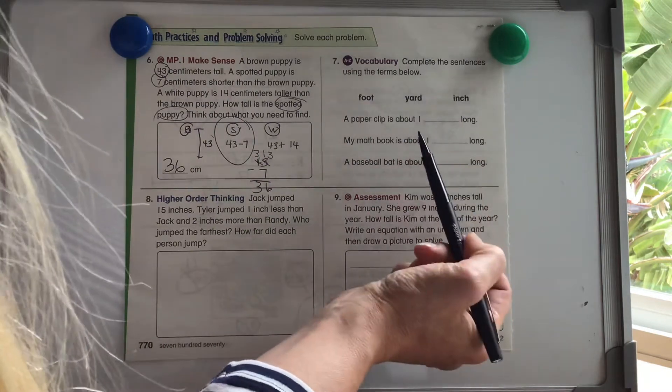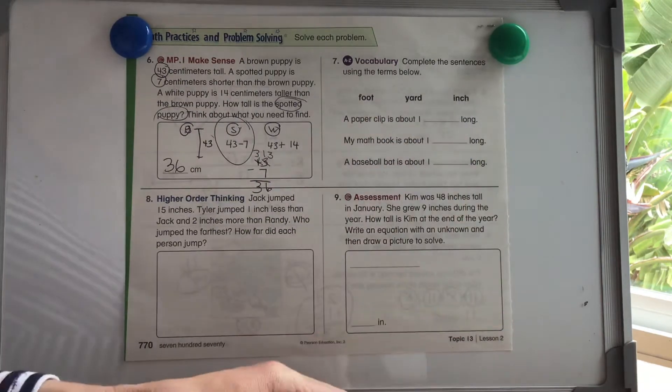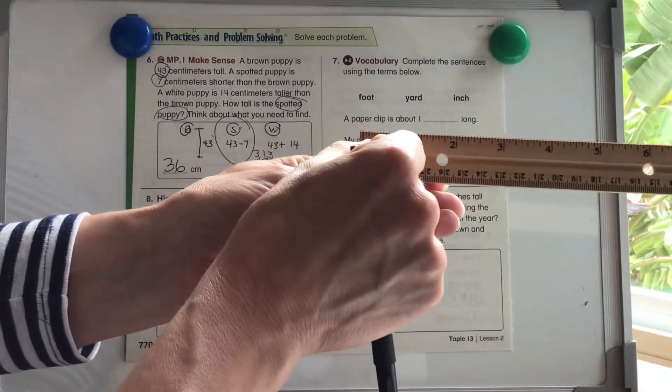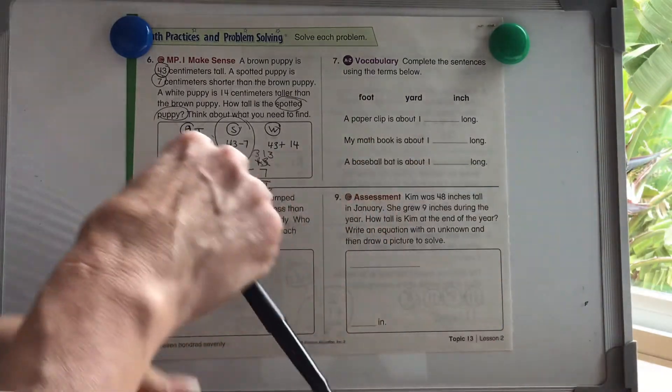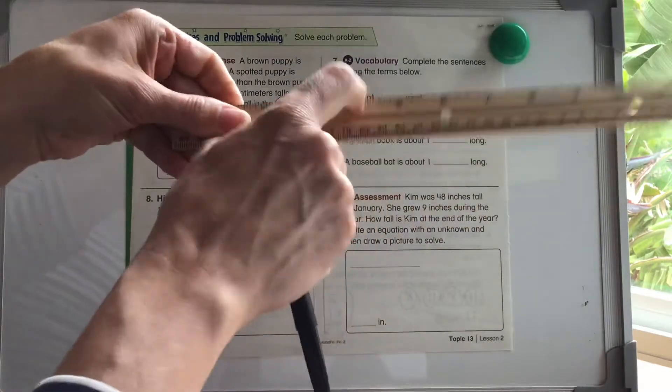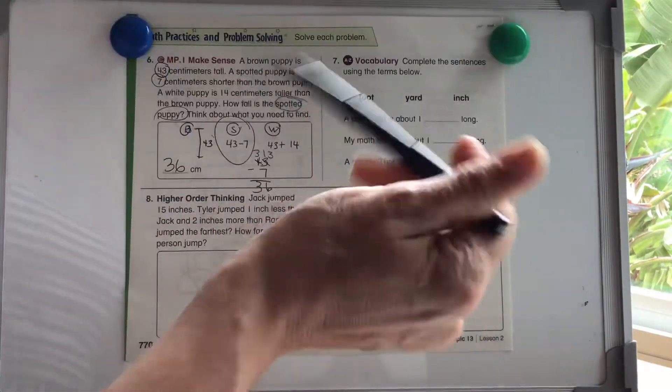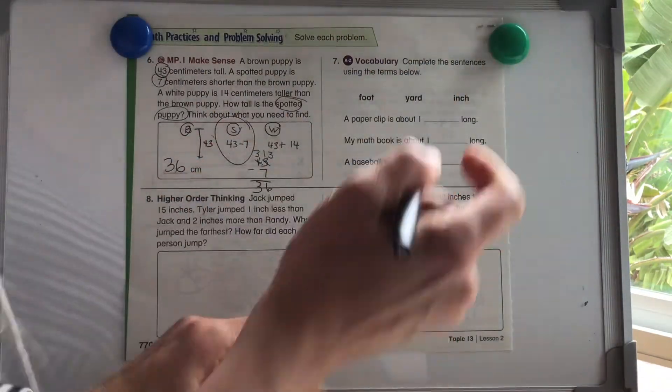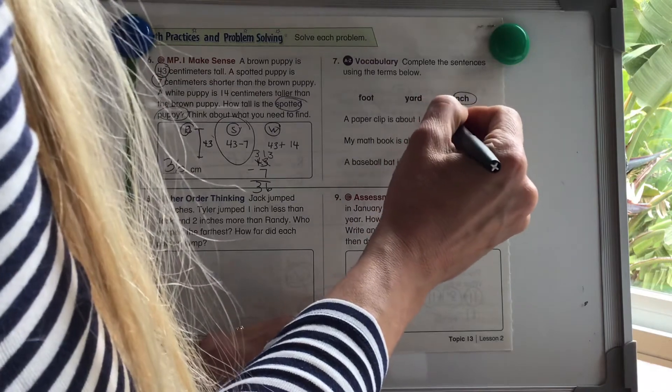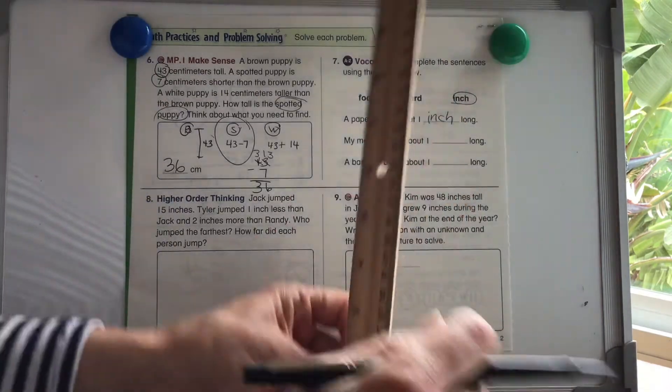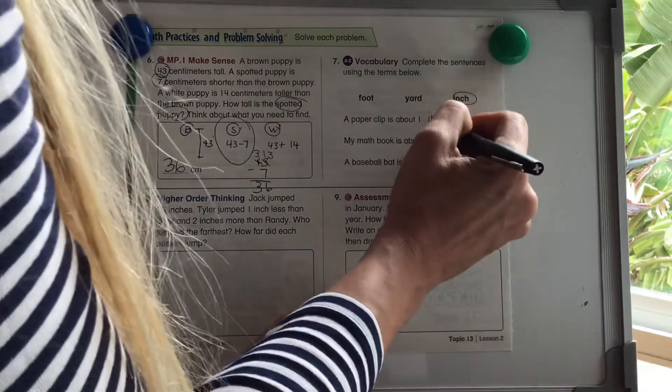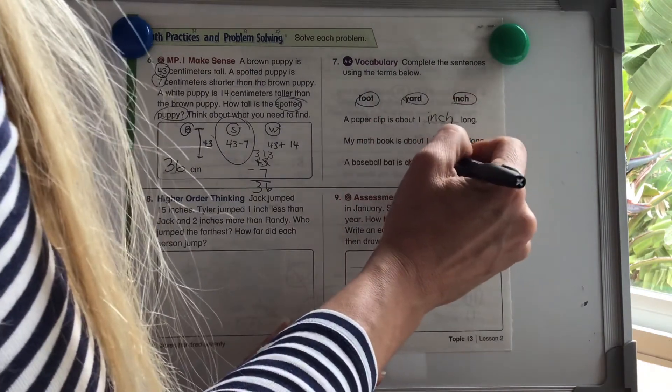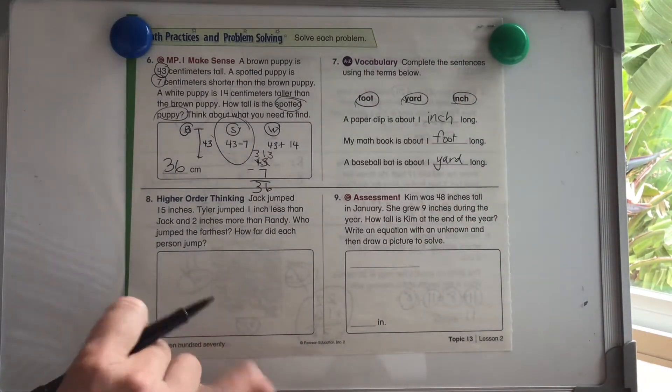Let's take a look at our vocabulary. Complete the sentences using the terms below. We're going to be comparing a foot, a yard, and an inch. A foot is 12 inches. An inch is one segment of the ruler. And then a yard is like our yardstick. There's about three of these, three rulers put together. So my paper clip is about what long? Is my paper clip, what is the paper clip in class about this long? No, it's tiny. It's going to be an inch. It's about one inch long. My math book is about one foot. Our math books are about one foot long. And my baseball bat is about one yard. A yard is about three feet.